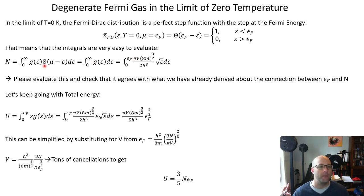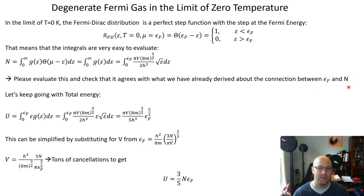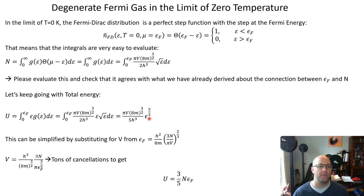The Heaviside step function cuts off the upper limit of the integral at the Fermi energy, so you can evaluate this and you'll see a known relationship between the Fermi energy and the number of fermions — check that that works. Do the same thing with the total energy: the upper limit is the Fermi energy, and you can do the integral pretty easily and get some constants times the Fermi energy to the 5/2 power.